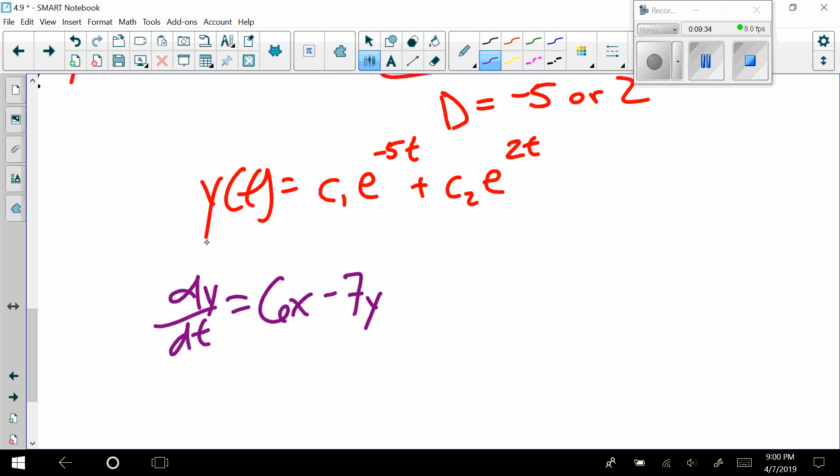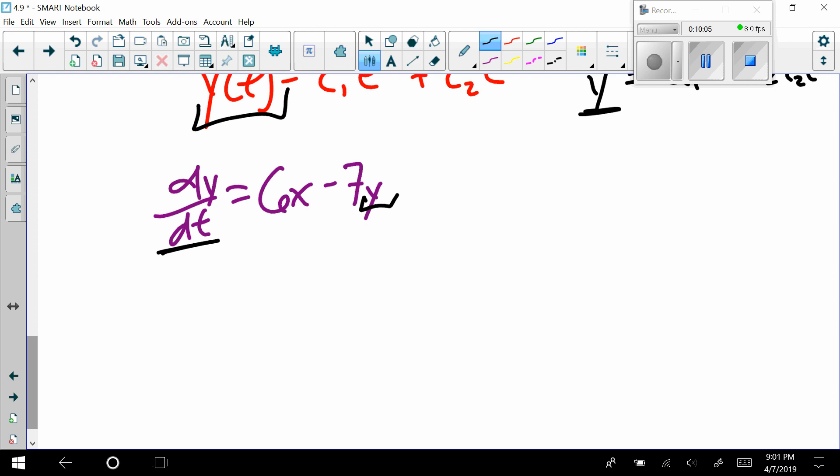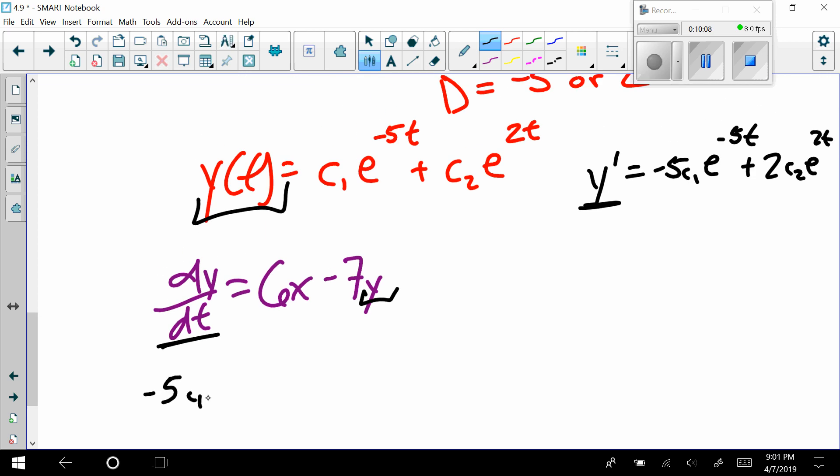Here, I chose dy/dt, by the way, because I had y and it's easy for me to find y prime. Y prime would be equal to negative 5 c sub 1 e to the negative 5t, and then plus 2 c sub 2 e to the 2t. Pretty easy to find, right? So, I take this thing, and I'm plugging it in right here. And then, I'm taking this y(t), and I'm plugging it in right here.